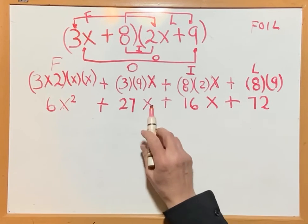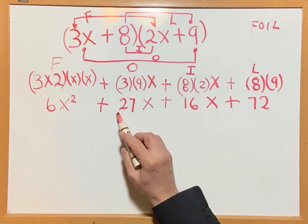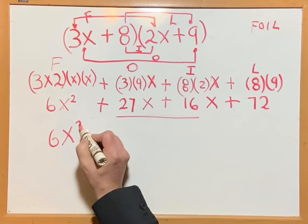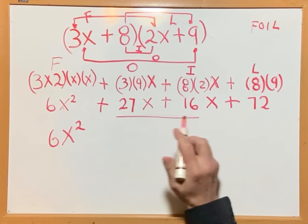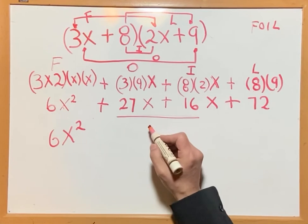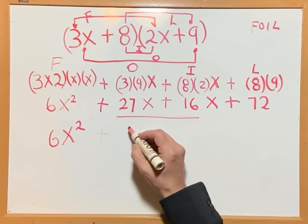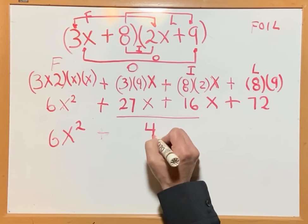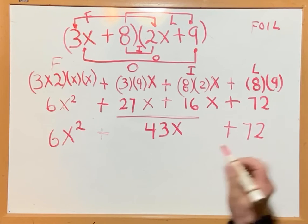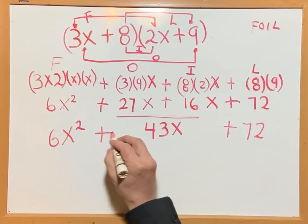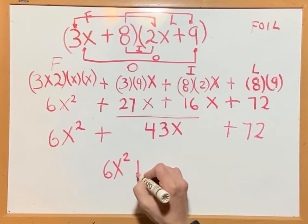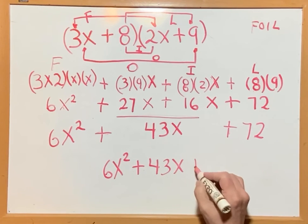Right now we have like terms — we have the same variable x and x, so these two terms need to be added. 27 plus 16 is 43. So we write it down: 6x squared plus 43x plus 72. That is the answer.